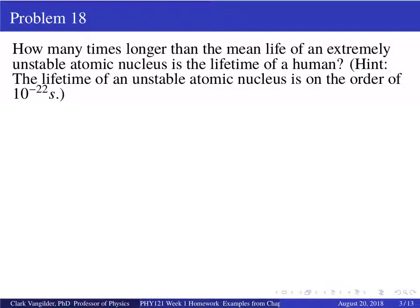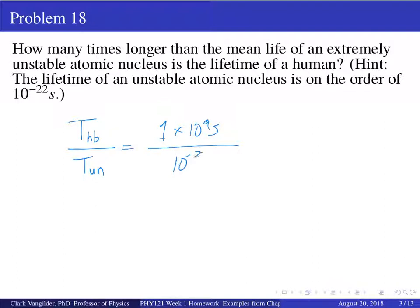It's not a formula — it's a ratio, a counting exercise. I'm going to divide the time of a human lifetime by the time of an unstable nucleus. We determined the human lifetime is about 1 × 10 to the 9 seconds. Divide by 10 to the minus 22 seconds and you get 10 to the 31. So human beings live 10 to the 31 times longer than an unstable nucleus.